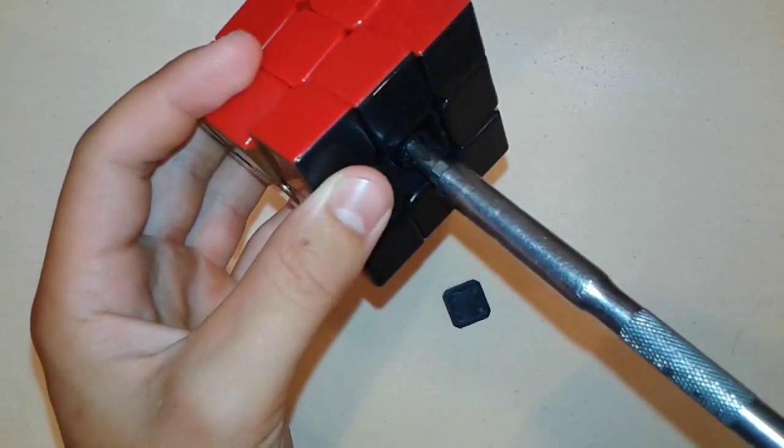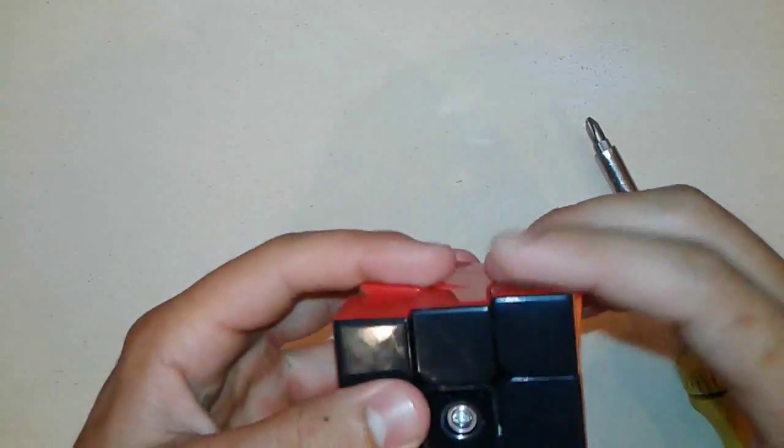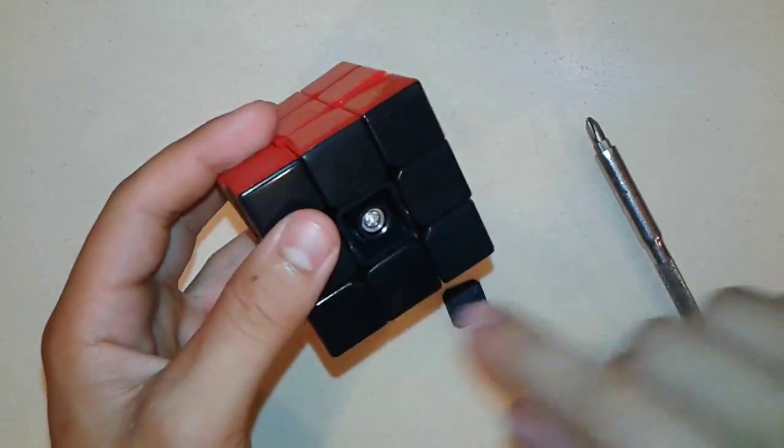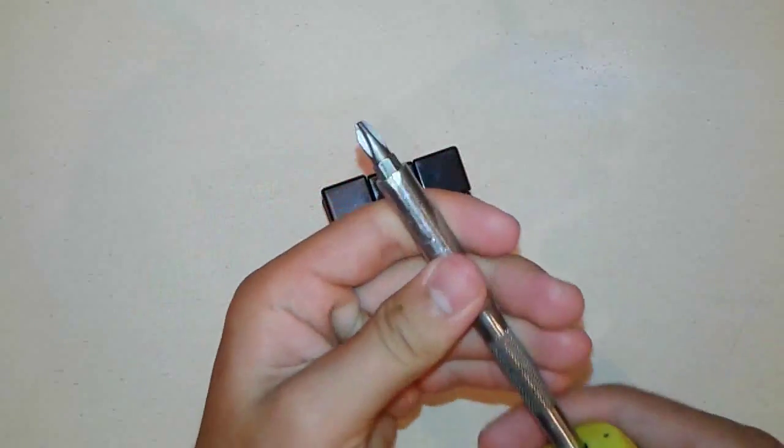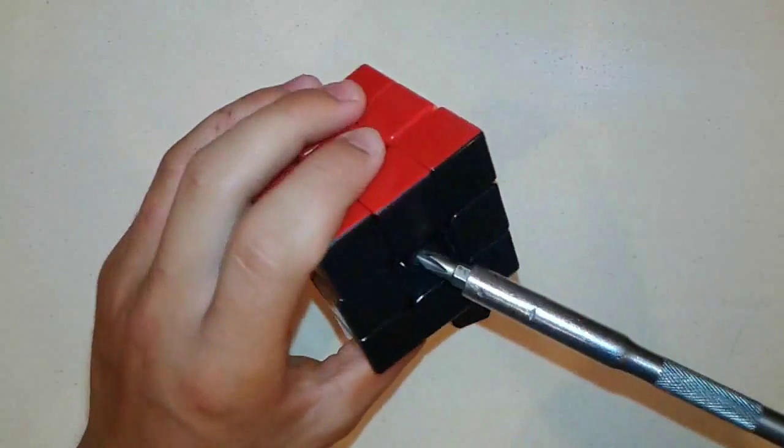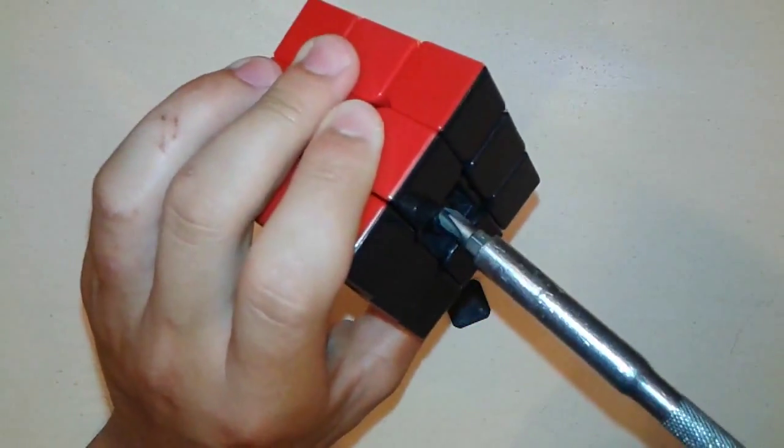There we go. Righty tighty, lefty loosey. So if you want the cube more loose, just turn that screw counter-clockwise. Or if you want the cube to be more tight, just turn it in the other direction.